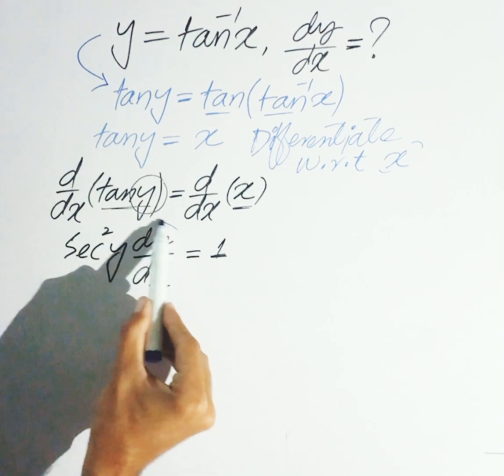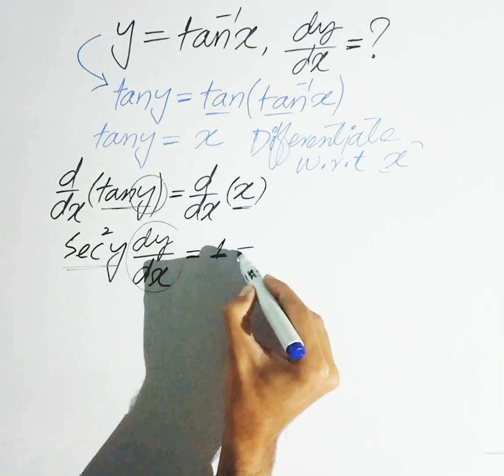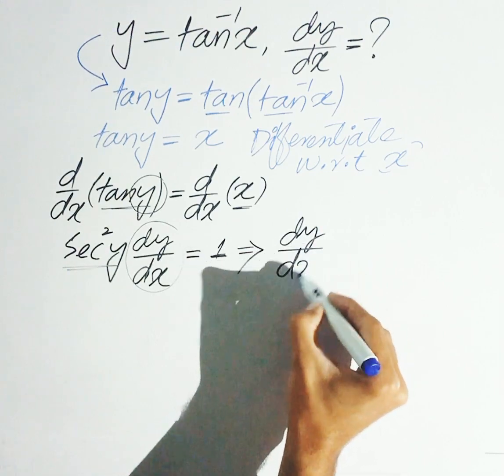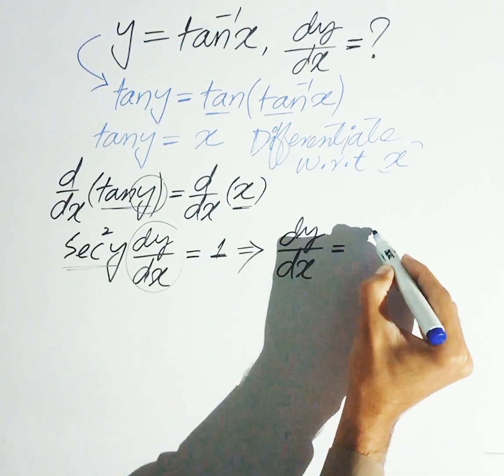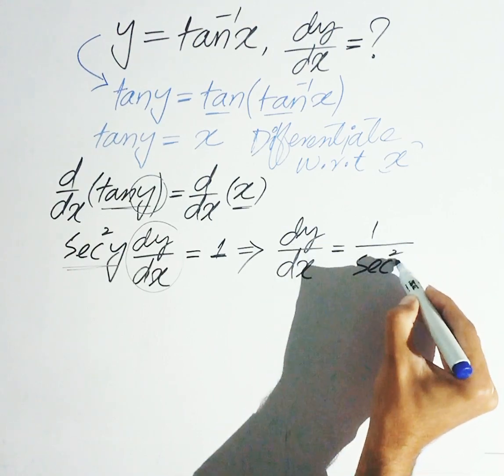Now we want to find dy/dx, so we divide by secant squared y. We will get dy/dx is equal to 1 divided by secant squared y.